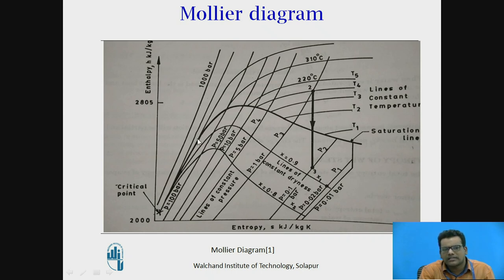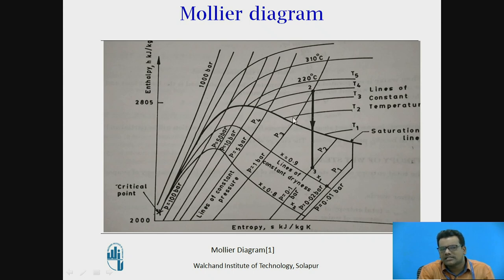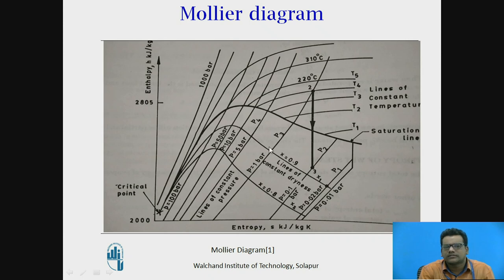If you draw parallel lines to the saturated liquid line, these represent constant dryness fraction lines. This line represents X of 1, this line represents X of 0.9, and this line represents X of 0.8. Other lines on the diagram represent constant temperature lines, and still others represent constant pressure lines. That is the use of the Mollier diagram.